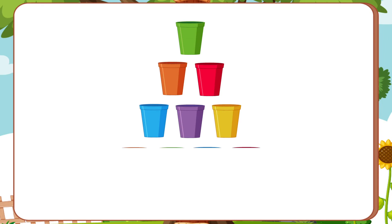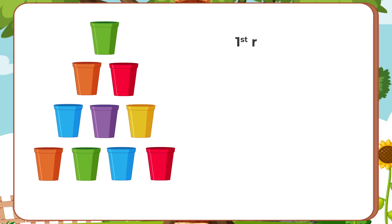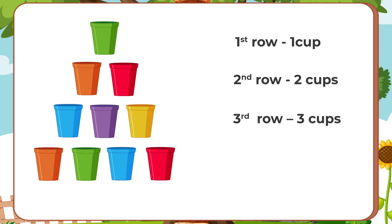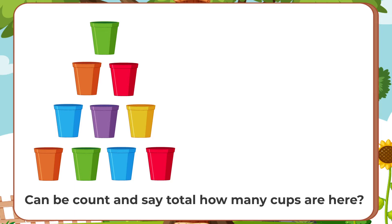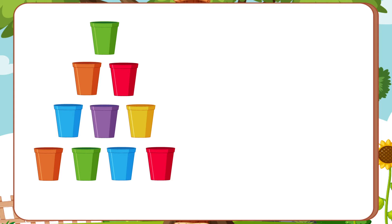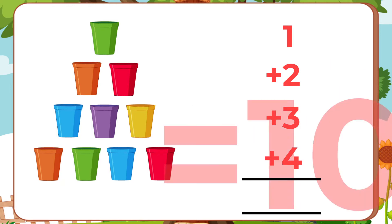Look at the picture kids. What can we see? There are some cups kept in groups, right? The first row has one cup, second row has two cups, third row has three cups and fourth row has four cups. So kids, now can we count and see there are total how many cups here? So, we will count in this way. One plus two plus three plus four equal to ten cups.